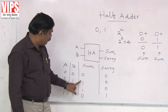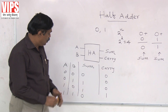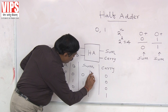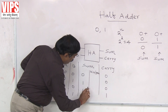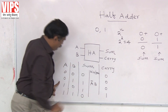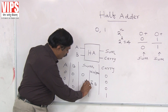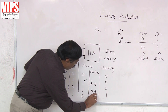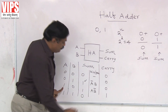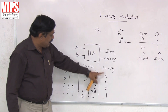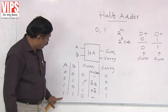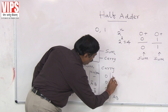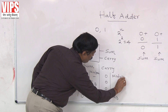Now write the min term of the ones appearing in the output. For sum, the first one corresponds to min term A̅B, and the second one corresponds to min term AB̅. The other rows have no ones in sum, so min terms are not required there. For carry, there is only one '1', so you write the min term for that one. The min term for carry is AB.